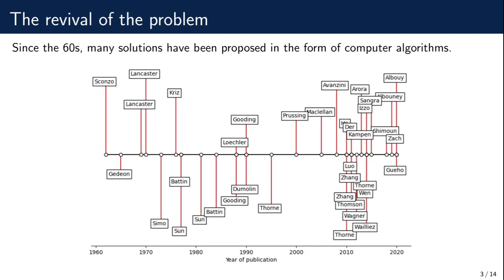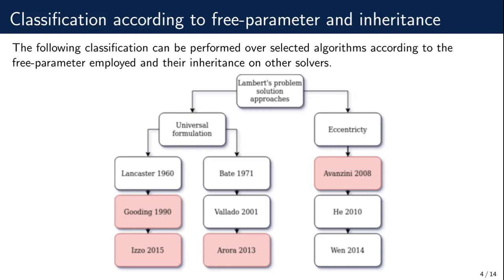Given the large amount of approaches, a simple question then arises: which one of these algorithms performs the best? The process of implementing all devised solvers along history would be a very long task. However, the methods can be classified according to the approach taken for solving the problem. Here we bring a classification according to the free parameter employed — universal variable or eccentricity. The classification tree shows also dependencies between methods within the same family.